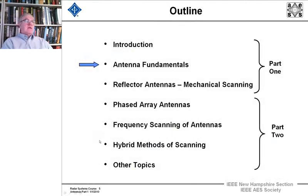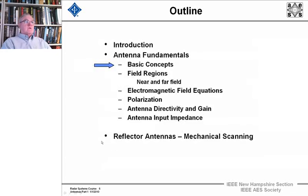Now let's look into antenna fundamentals. If you have a good background in Maxwell's equations, as I suggest, you should understand most of this stuff pretty much right off the bat. We're going to look at basic concepts, the two different field regions—near field and far field—explain what they are. The electromagnetic field equations, polarization, antenna directivity and gain, and the antenna input impedance. And then we're going to take on the subject of mechanical scanning reflector antennas. So we're going to go through these basic concepts one at a time.